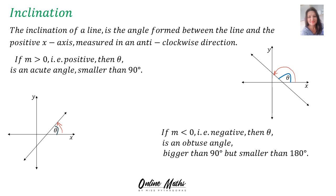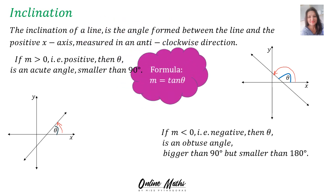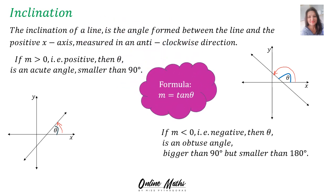To find the inclination of a line there is a formula, and the formula is: m (gradient) is equal to tan theta.